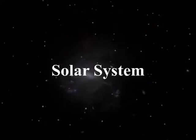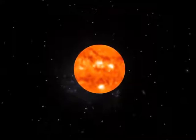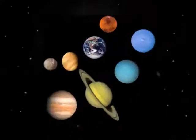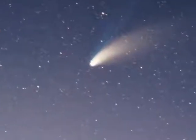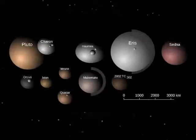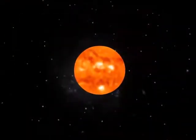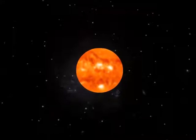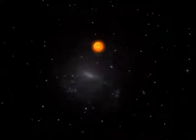The solar system consists of the Sun and those celestial objects bound to it by gravity, all known planets and their moons, along with the comets, asteroids, dwarf planets, and other space objects that orbit the Sun. The Sun is the biggest object in the solar system. In order of their distances from the Sun, the eight planets are: